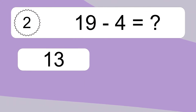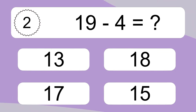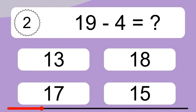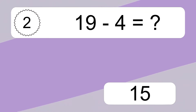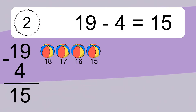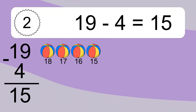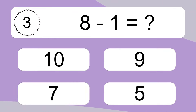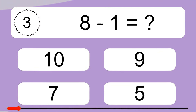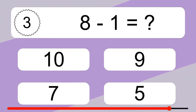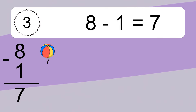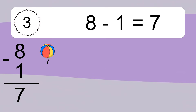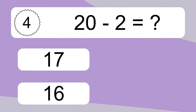19 minus 4 equals what? 19 minus 4 equals 15. Let's count it: 18, 17, 16, 15. 8 minus 1 equals what? 8 minus 1 equals 7. Let's count it: 7.